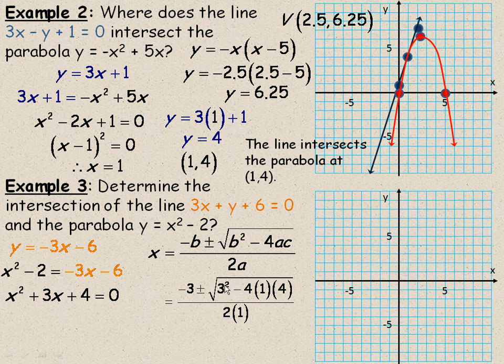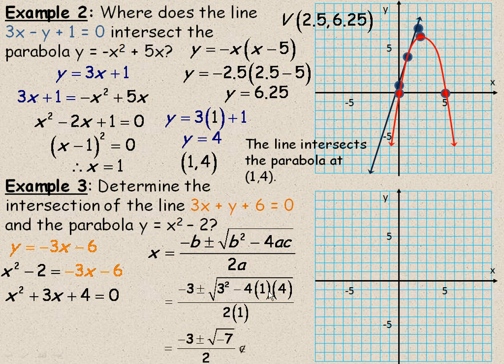Now, underneath the square root, we have 3² is 9. And this would be minus 16. 9 - 16 is, of course, a negative value. It's -7. So we have a -7 underneath the square root.